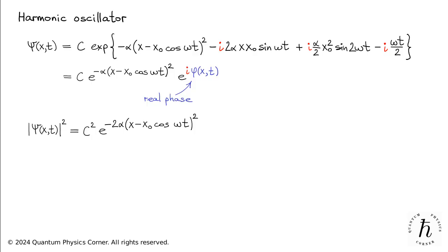In fact, the squared modulus of the wave function appears to be a simple Gaussian packet centered at the point where we would expect to find the classical particle at time t.